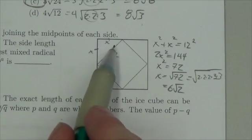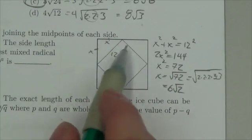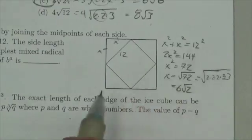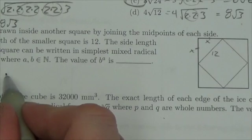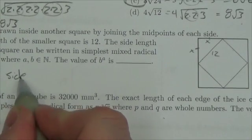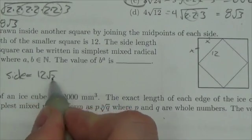But that is just x there. And then the side length of the larger square is going to be twice that. So therefore, the answer is the side is going to be equal to 12 root 2.